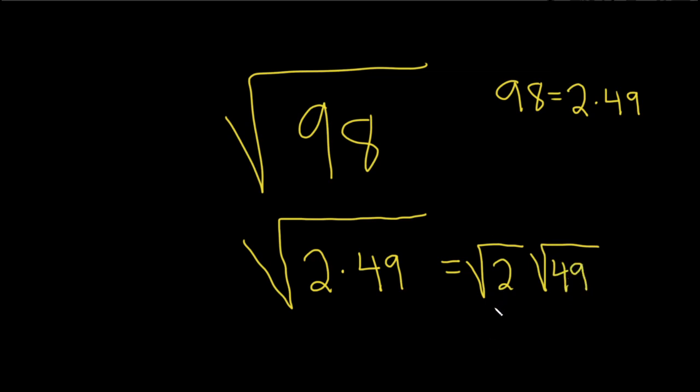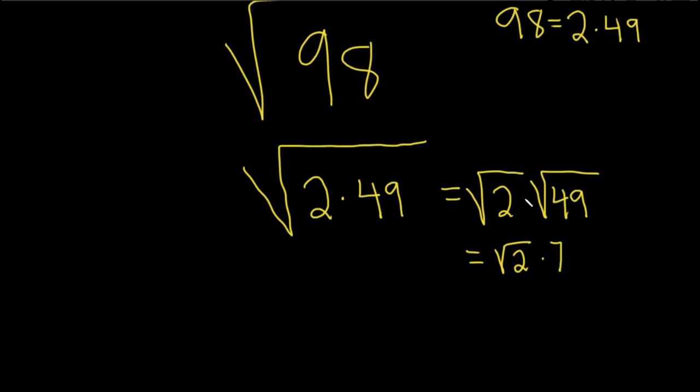And the square root of 49 is 7, so this is the square root of 2 times 7. And we probably don't want to leave our answer like this. It's always better to put the numbers in the front. So this is equal to 7 times the square root of 2.